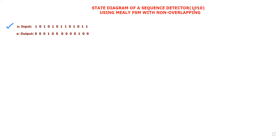This sequence detector detects the 1010 bits in the input data. In the detection process, we should use the finite state machine — specifically the Mealy type of finite state machine. We should follow the non-overlapping condition throughout the detection process.